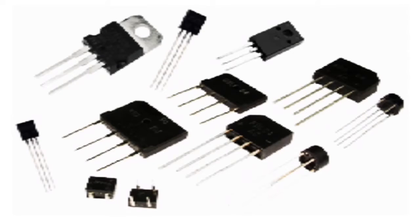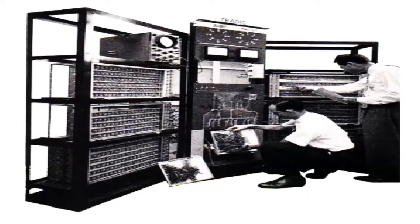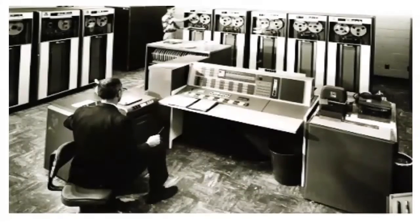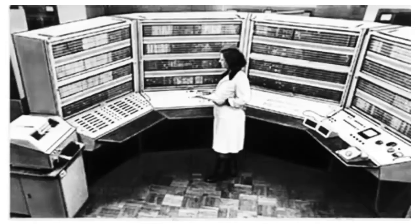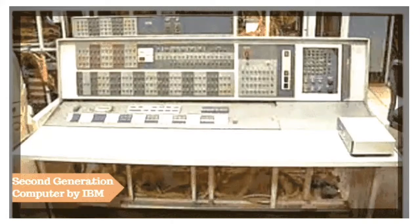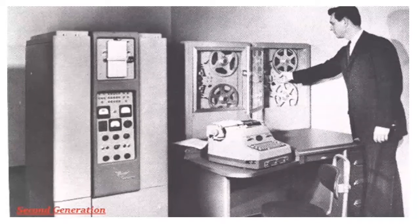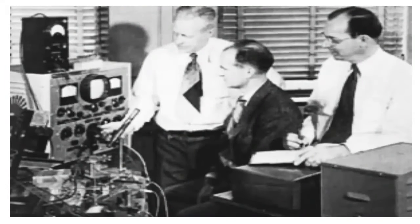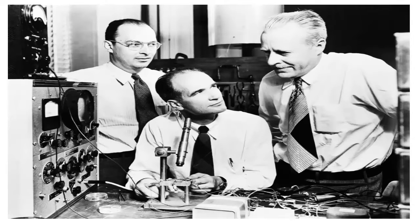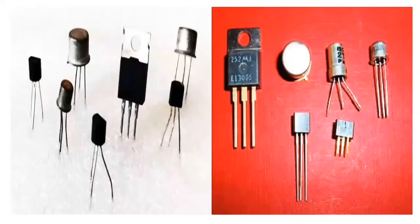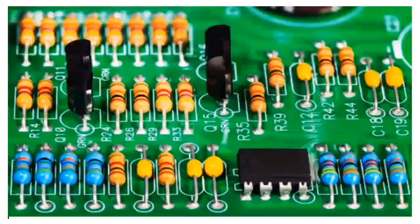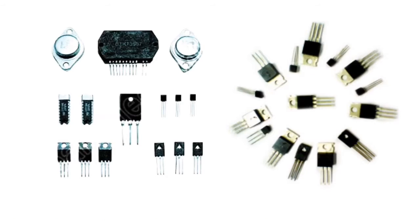Second generation. Using transistors, the second generation computers were made. They were faster, smaller, cheaper, more energy efficient and more reliable than the first generation computers. They generated less heat and were less prone to failure. They took comparatively less computational time. Atlas and Mark III are examples of second generation computers. John Bardeen, William Shockley and Walter Brattain invented the transistor in 1947 at Bell Labs, which revolutionized the field of electronics. The inventors were jointly awarded the 1956 Nobel Prize in Physics for their achievement.